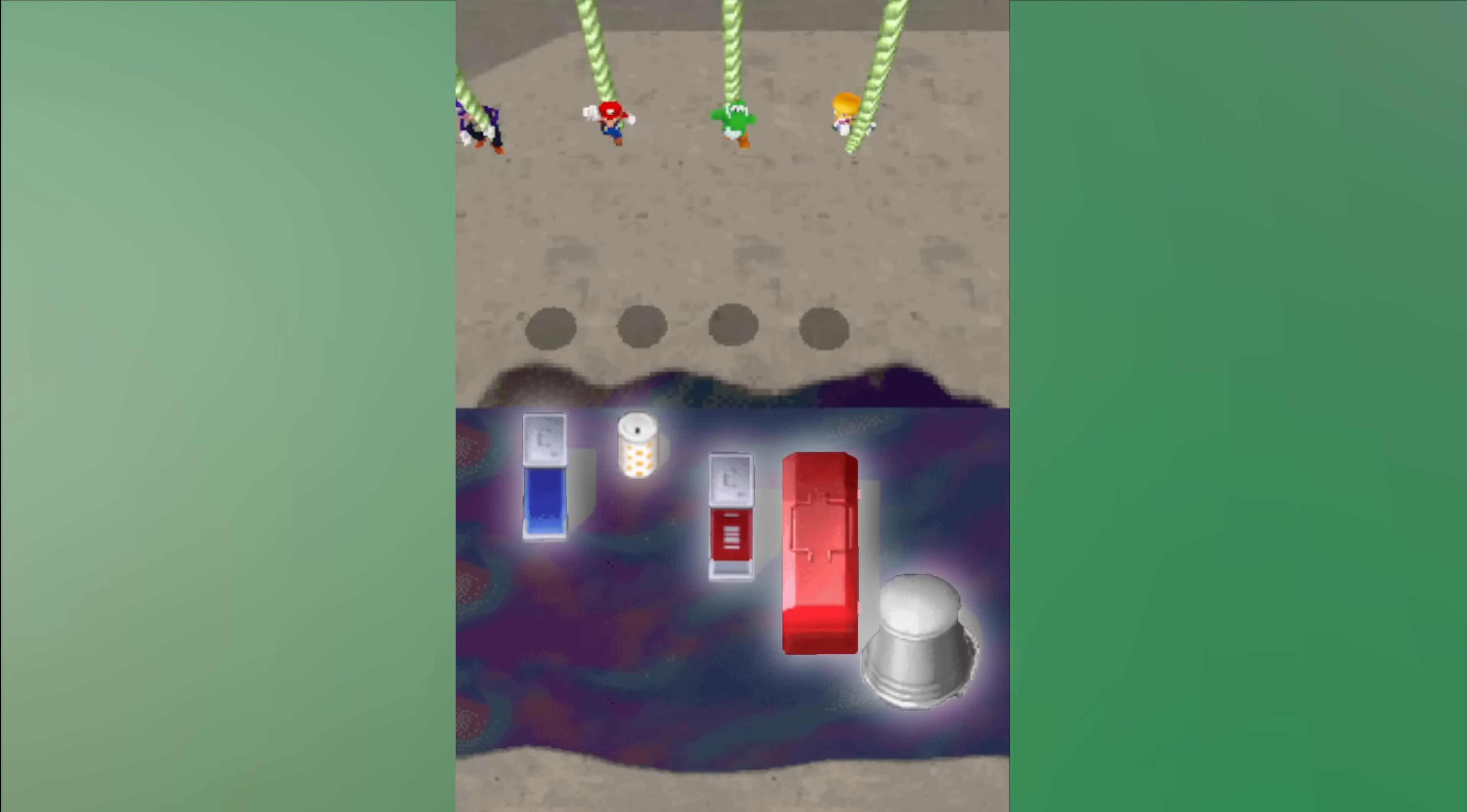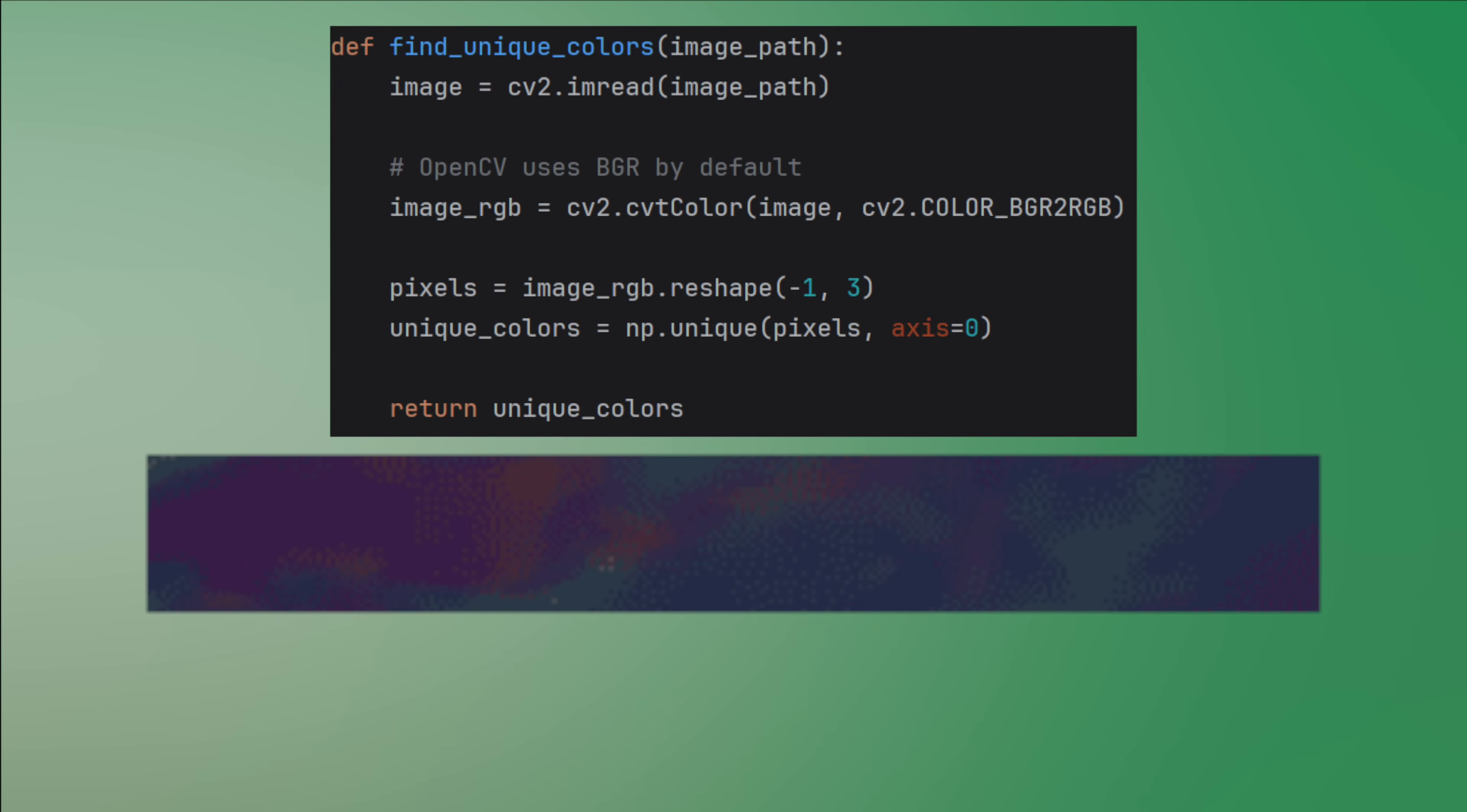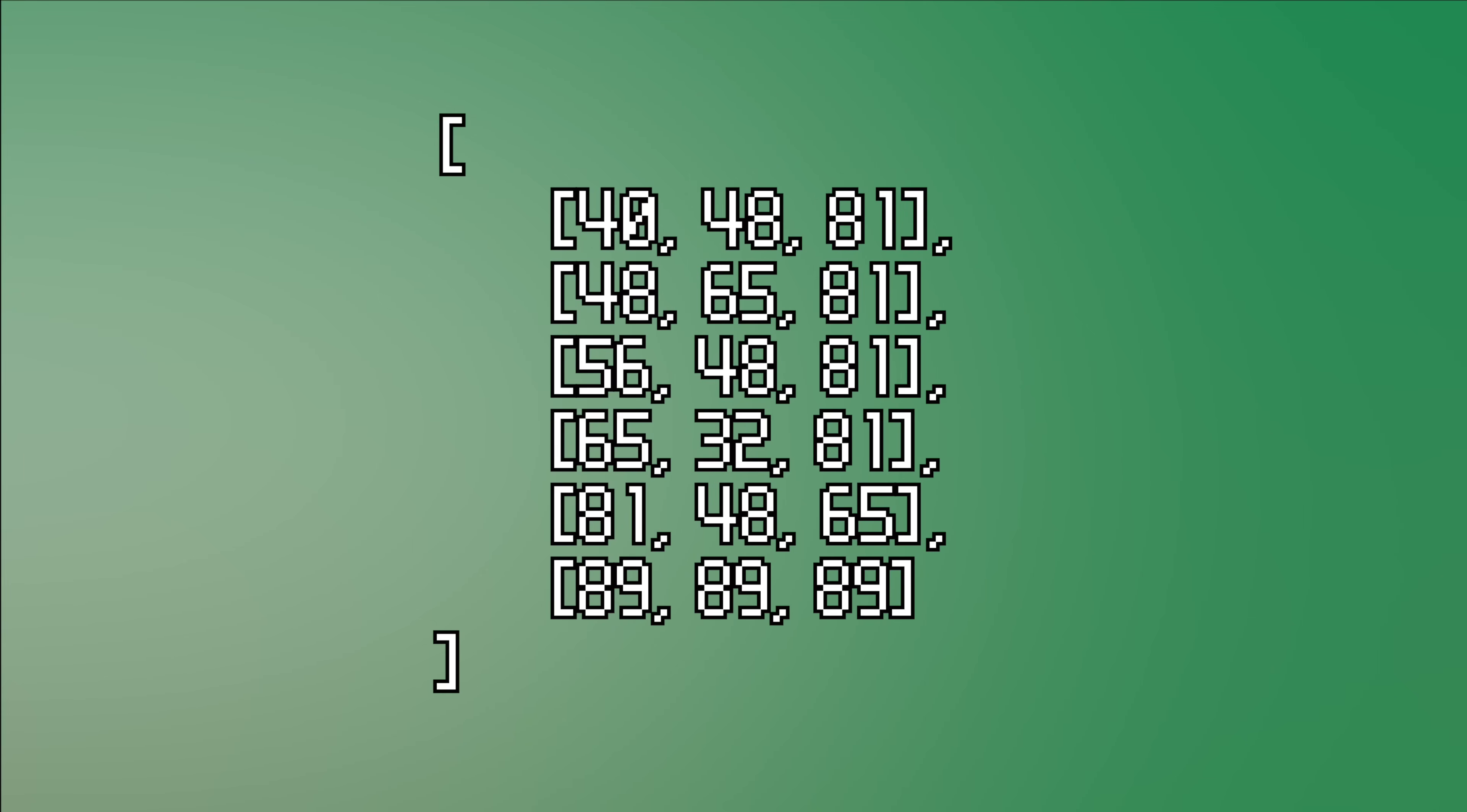To detect whether an object is at that point I first needed to separate it from the background. I noticed that the goo is made up of only a small amount of colors and none of them are used in the landing platforms. To find all the colors I loaded a screenshot with OpenCV and used NumPy's unique function to extract them. The resulting colors can easily be stored in an array and filtered out at runtime.